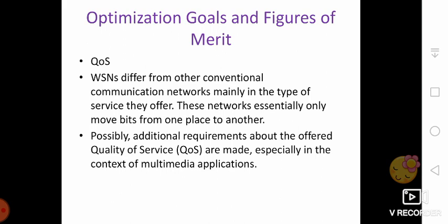What is the probability that an event that actually occurred is not detected, or more precisely not reported to an information sink that is interested in such an event? For example, not reporting a fire alarm to a surveillance station would be a shortcoming. This probability can depend on or be traded off against the overhead spent in setting up structures in the network that support the reporting of such an event.